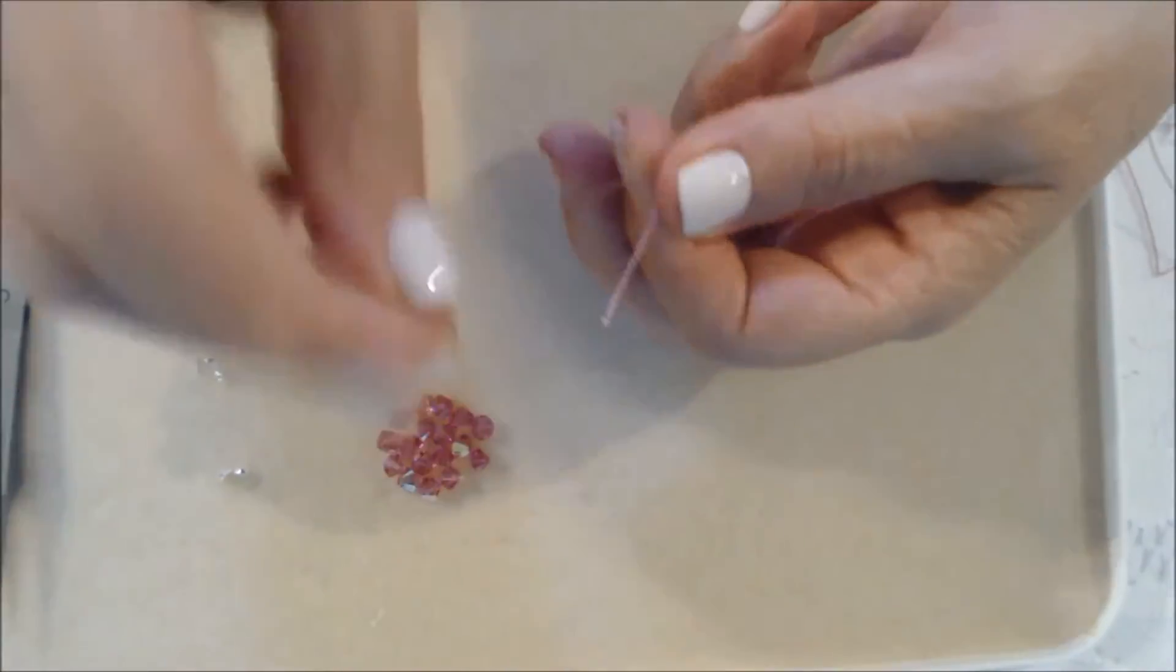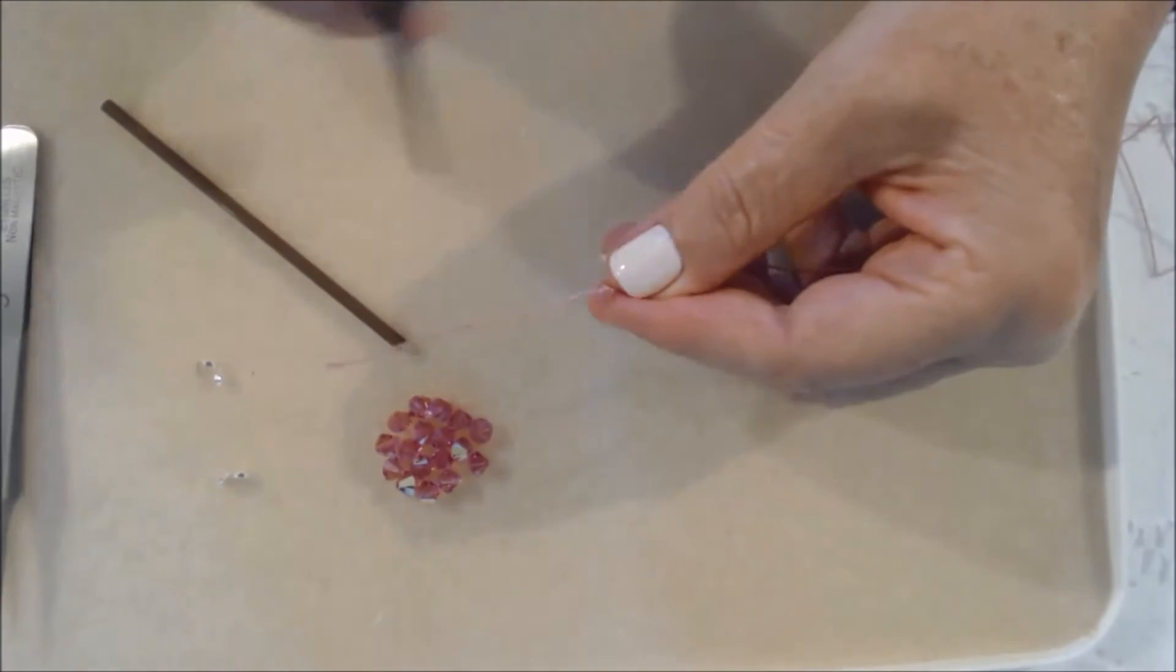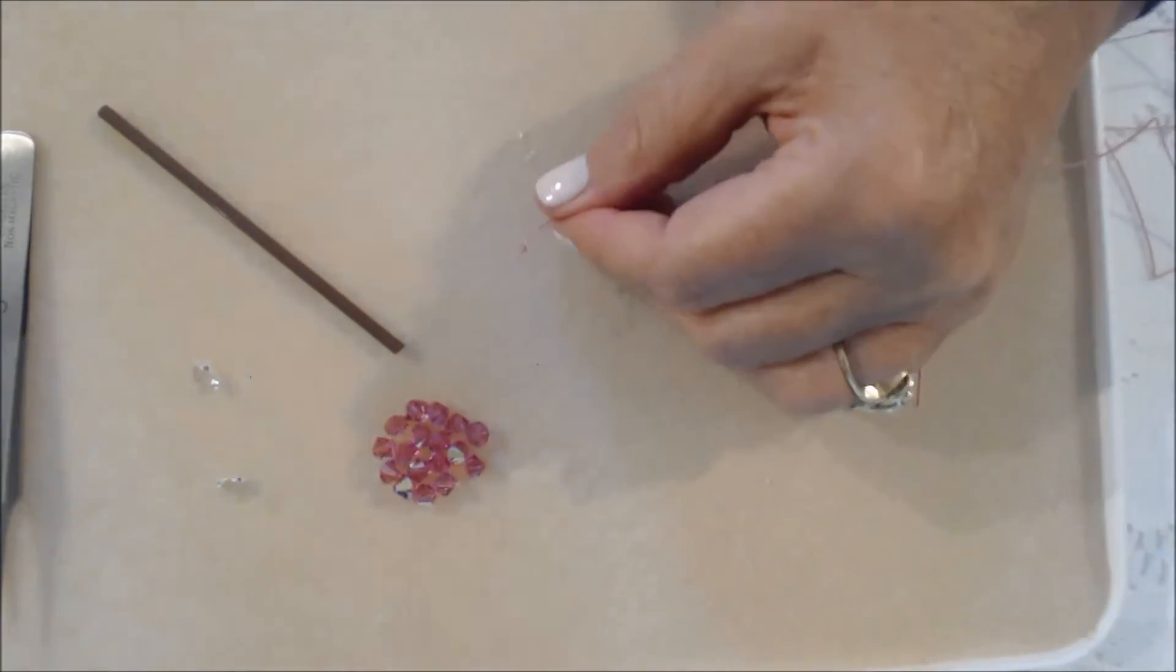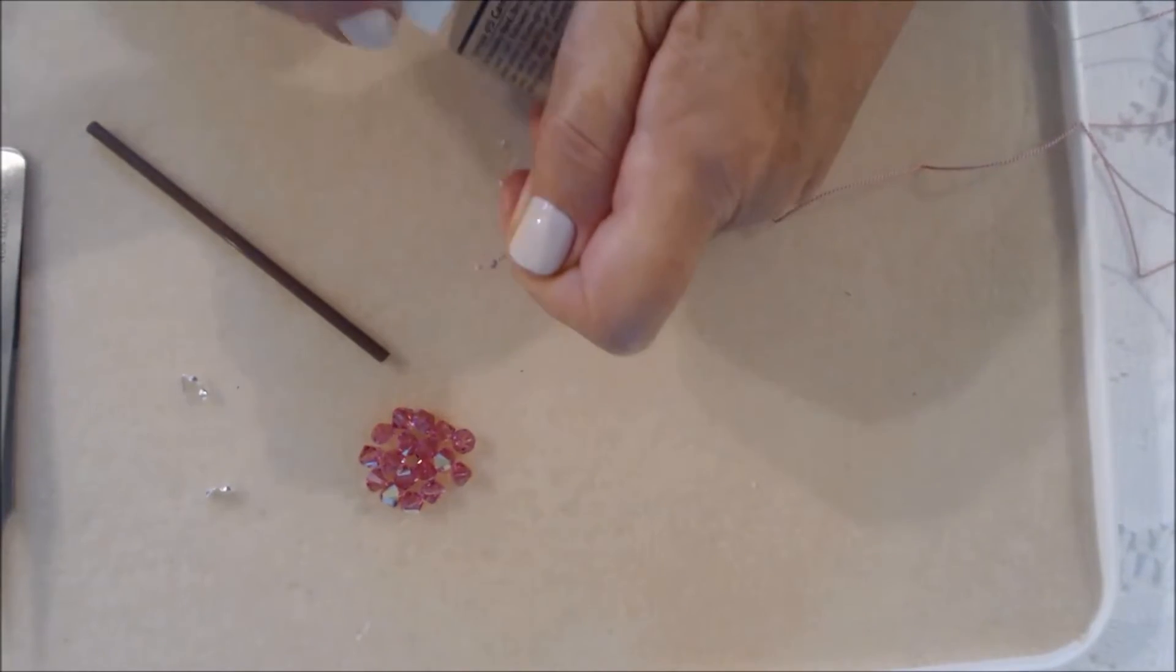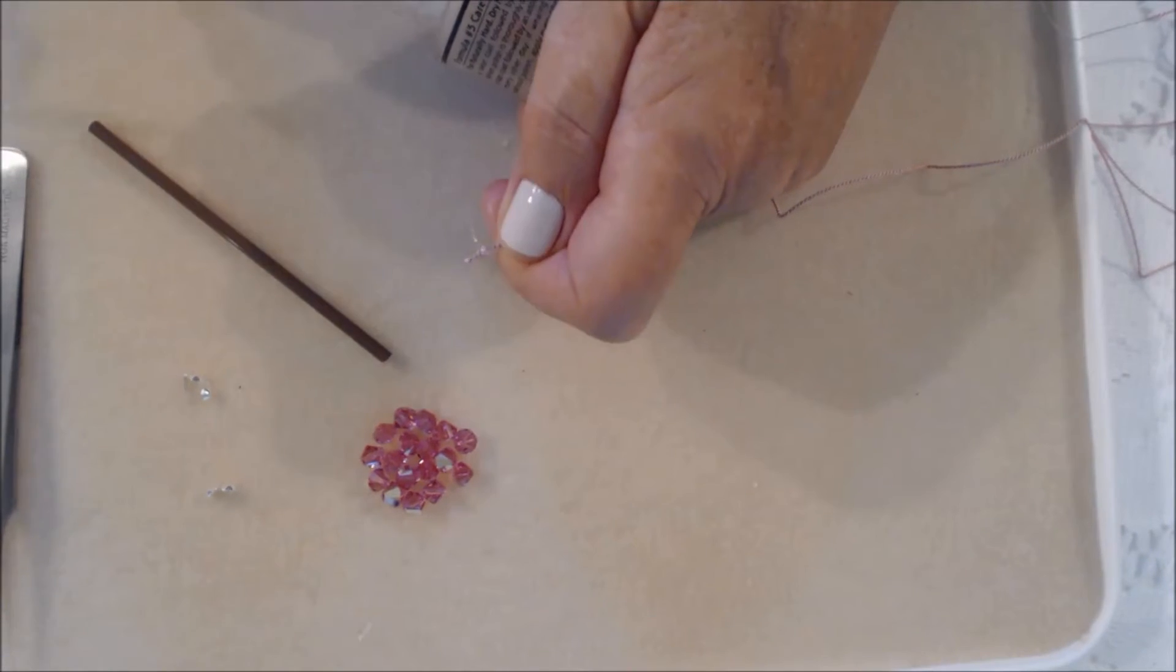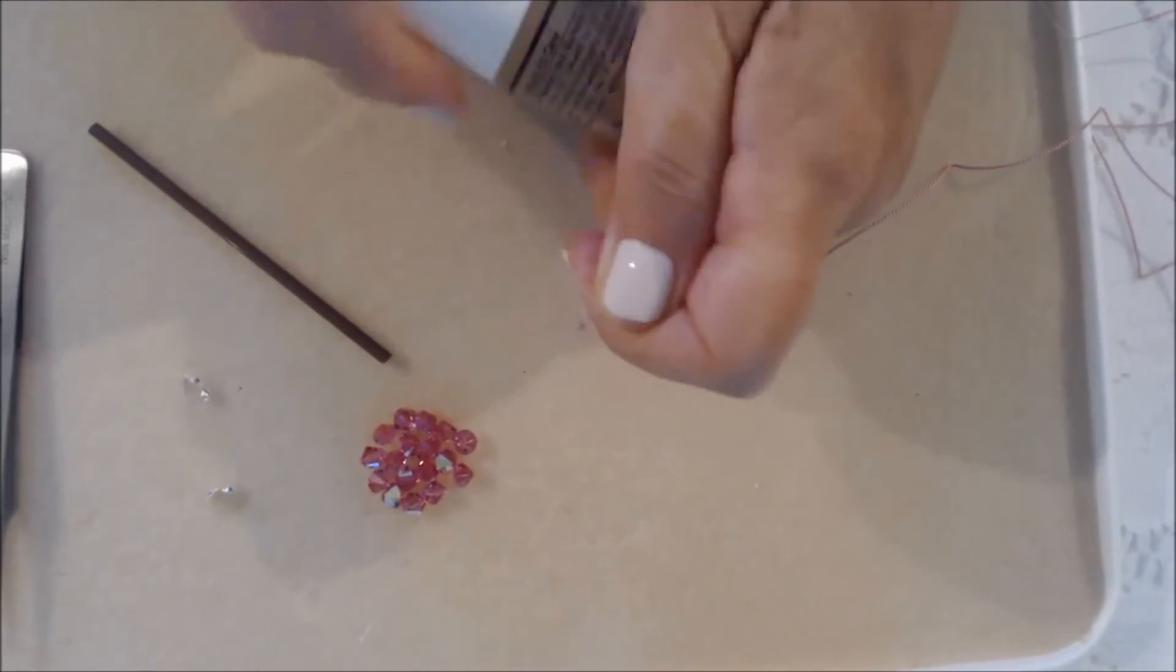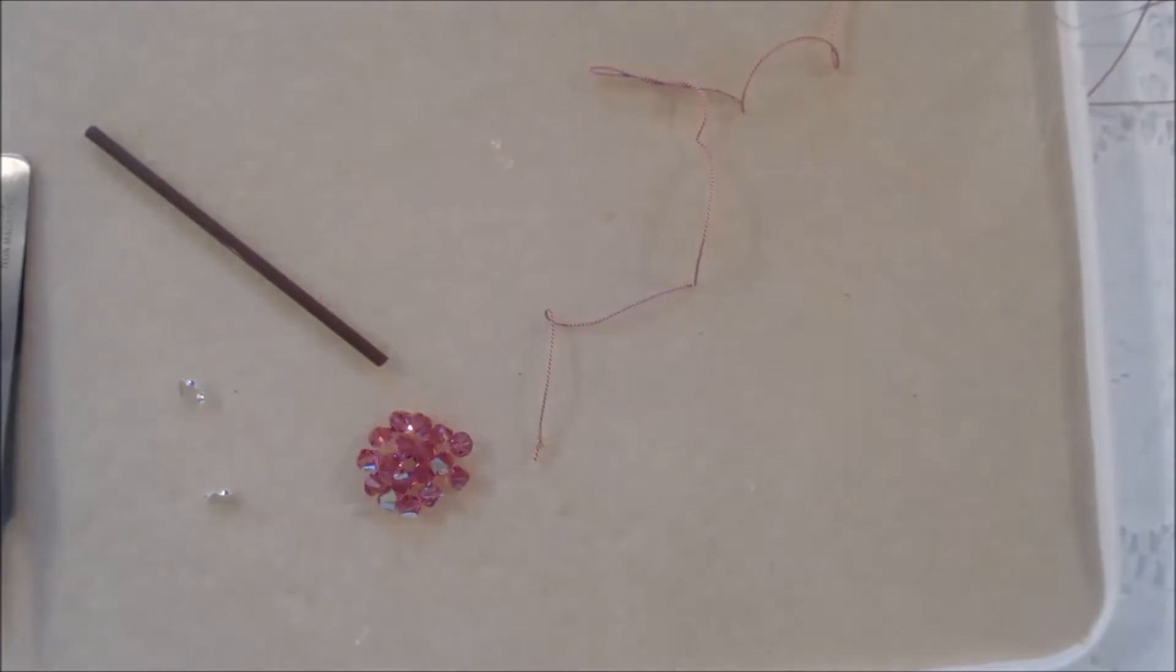Then you want to put a knot in your silk. Cut off the extra. Put a dab of glue or nail polish on your knot. And then you want to blow on it or let it dry. There we go. Then you want to find your needle, the other end. Here it is.